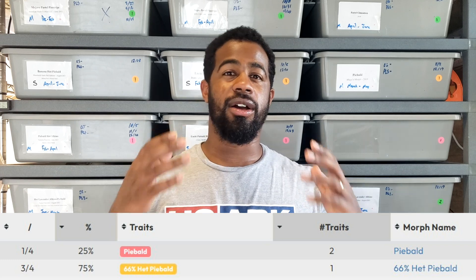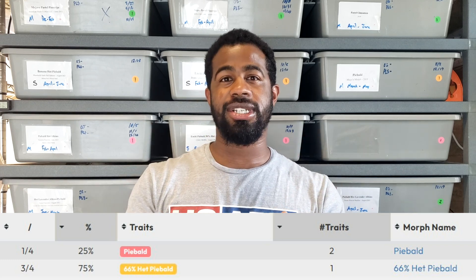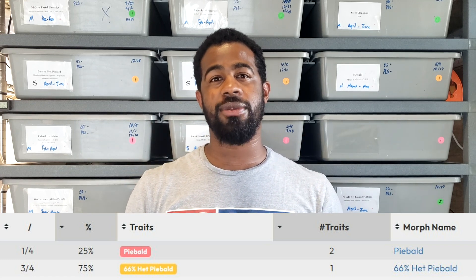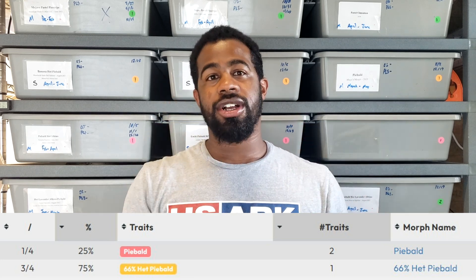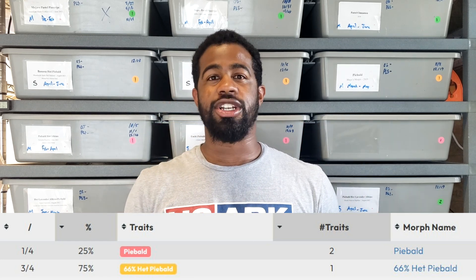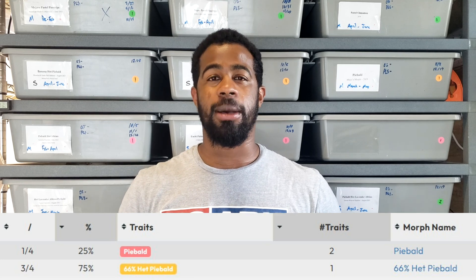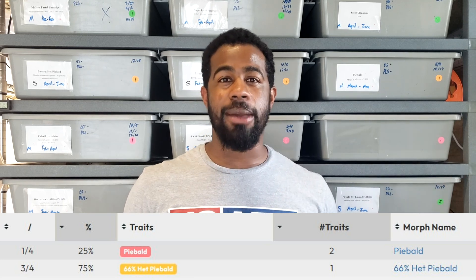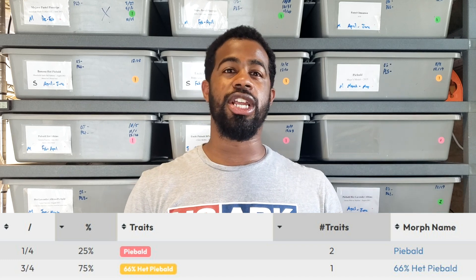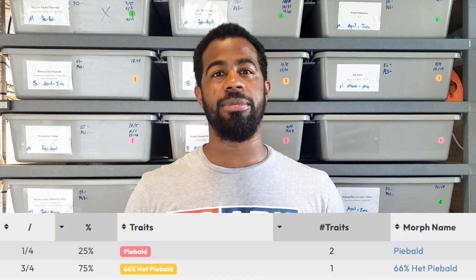All you have to do is go on the Morph Market calculator and put your 100% het recessive paired with your other 100% het recessive. The Morph Market calculator will show you that 25% of the babies are going to come out visual for that recessive genetic, and then 66% het are going to come out. Because you don't know which babies are going to be actual het, you only know that at least two out of three babies are going to be het.